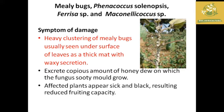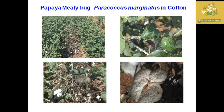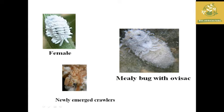The next pest is mealybug, with scientific name Phenacoccus solenopsis, and other species of Ferrisia and Maconellicoccus. The major symptom is clustering of mealybugs on the undersurface of leaves, forming a thick mat with their waxy secretion, leading to honeydew secretion and secondary sooty mold fungal infection. The affected plant shows stunted growth with reduced fruiting capacity.